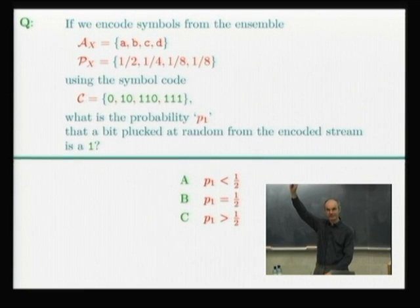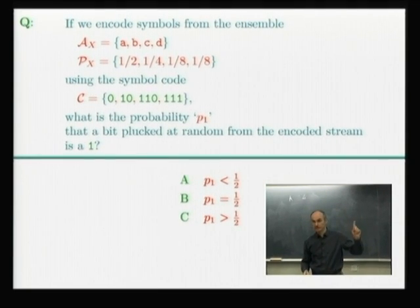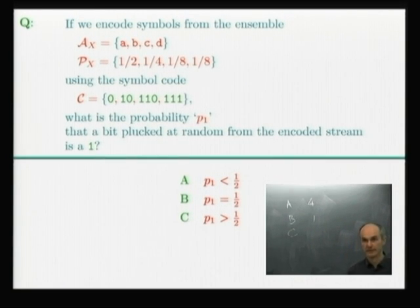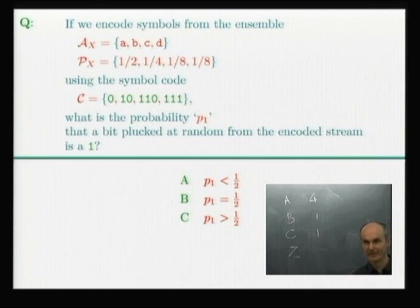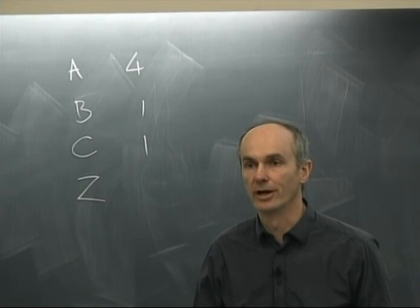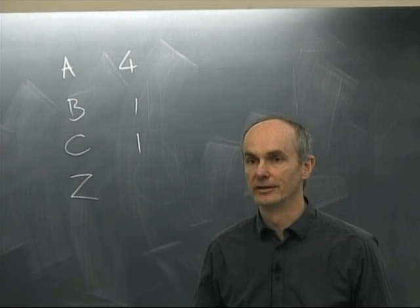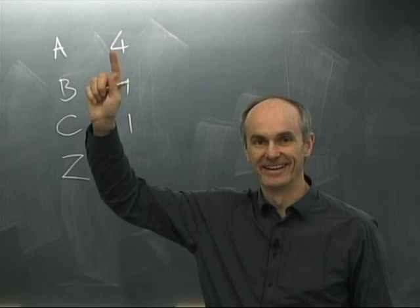Votes for Z - I don't know. Votes for A - P(1) is less than a half - got a few votes there. Votes for B - P(1) is equal to a half - one vote. Votes for C - P(1) is bigger than a half. So we've got a range of answers. Could a volunteer from community A take us through the argument? What is your P(1) and what was your method for calculating it?